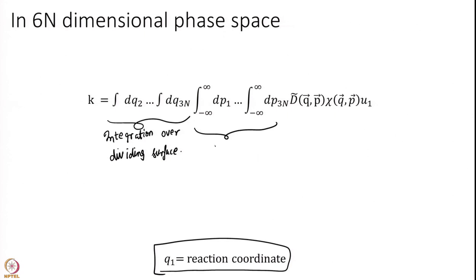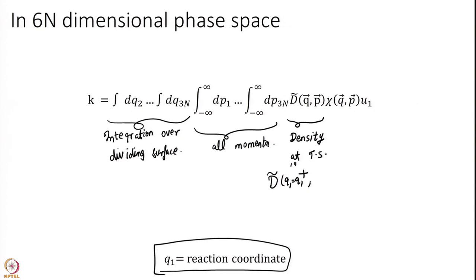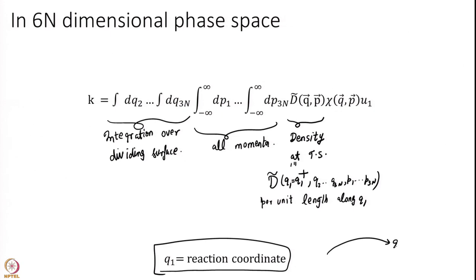So, here is the reactant, here is the product, and this is a surface in between. I am integrating over all momenta. B here tells me density at the transition state. I have used a shorthand notation, but this is exactly Q1 equal to Q1-dagger — that is, my Q1 is set at the transition state and all other coordinates. This is my density per unit length along Q1.